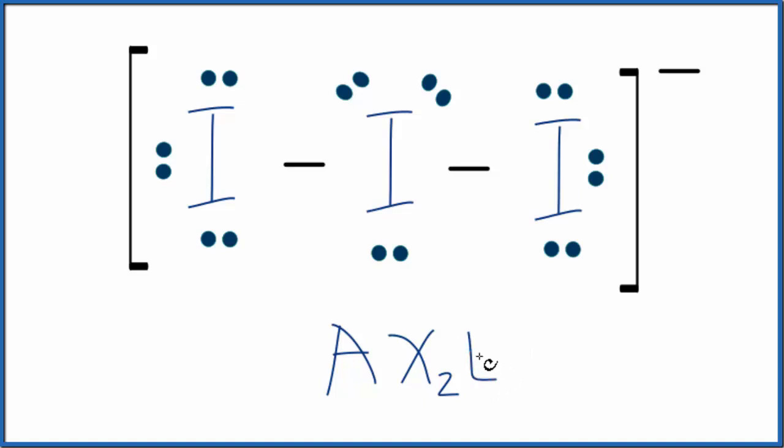And then E, that would be the number of lone pairs. We have one, two, three, so E3.